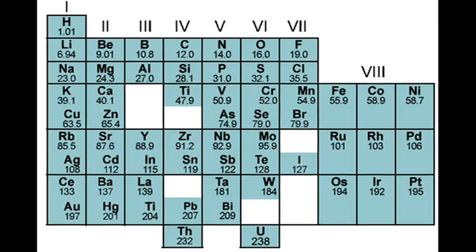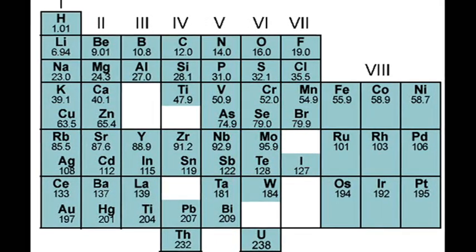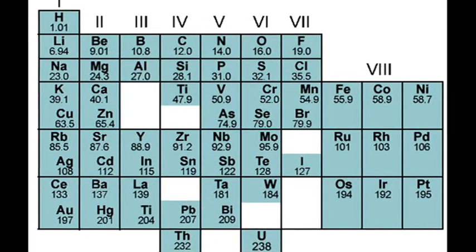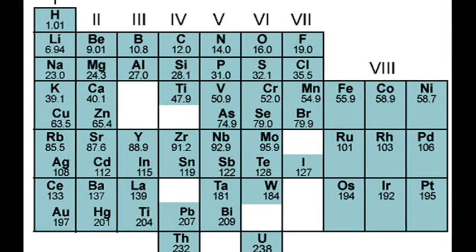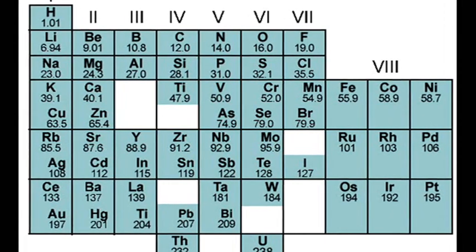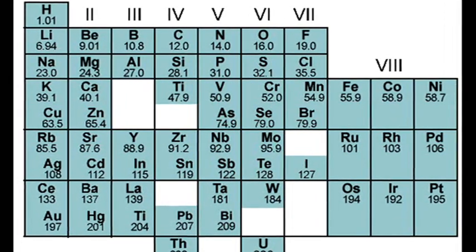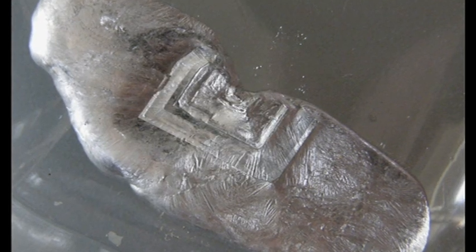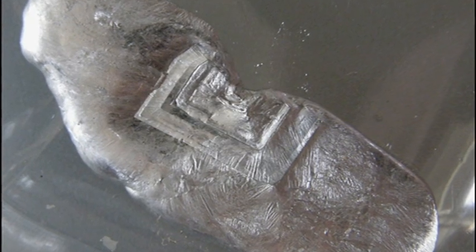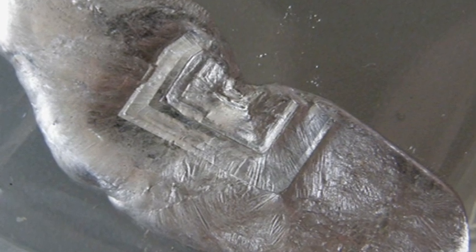While Mendeleev's approach led to there being some gaps or spaces in periods where he believed an element should exist, he was able to calculate the missing element's atomic mass and properties. His predictions later turned out to be correct when previously missing elements such as gallium were discovered.